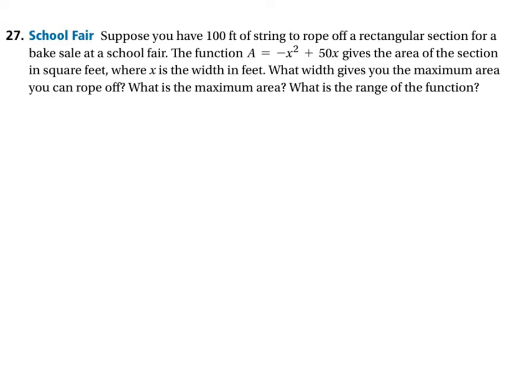The function A equals negative x squared plus 50x gives the area of the section in square feet. They want us to find the maximum area we can rope off. Let's find the maximum by first taking that equation and identifying what's A and what's B.